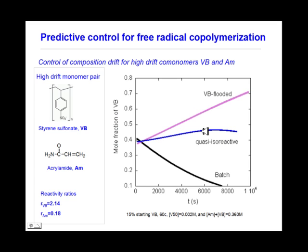Another type of control we achieved is controlling composition drift for high-drift comonomers — styrensulfonate and acrylamide. Their natural trend in mole fraction of styrensulfonate versus conversion for a batch reaction is shown in black. If we flow one of the comonomers — in our case styrensulfonate — we can reach a quasi-isoreactive regime, or we can reverse the copolymer composition as desired.